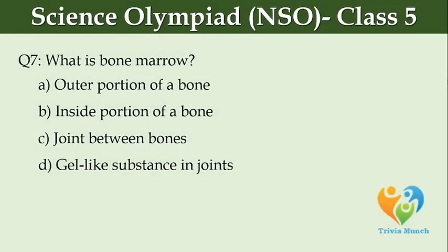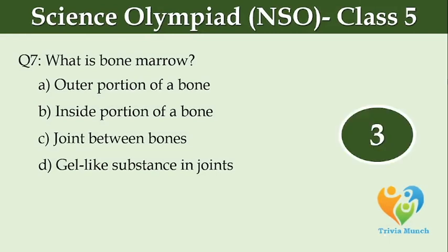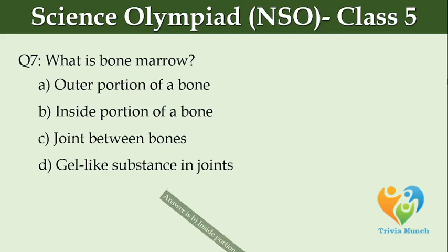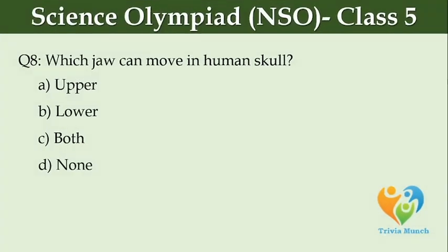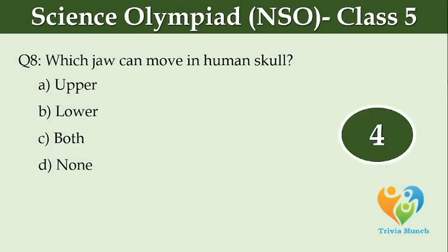What is bone marrow? Option A: outer portion of a bone. Option B: inside portion of a bone. Option C: joint between bones. Option D: gel-like substance in joints. Which jaw can move in human skull? Option A: upper. Option B: lower. Option C: both. Option D: none.